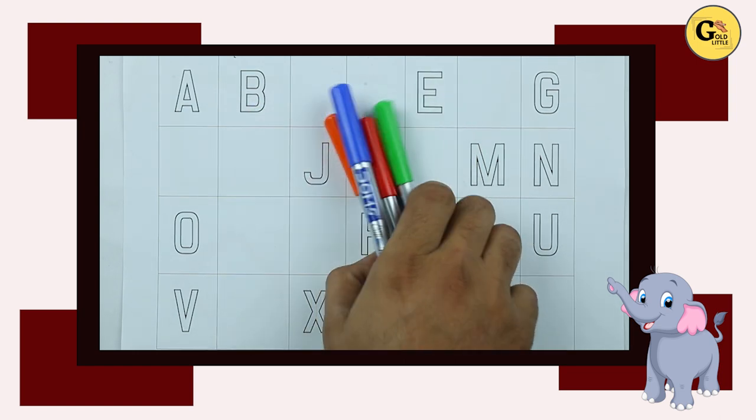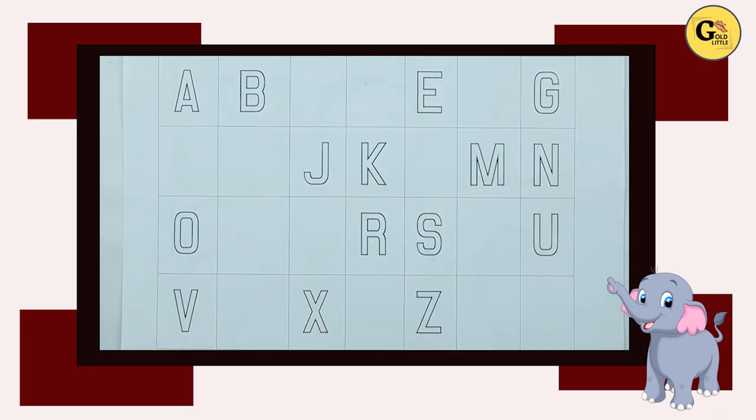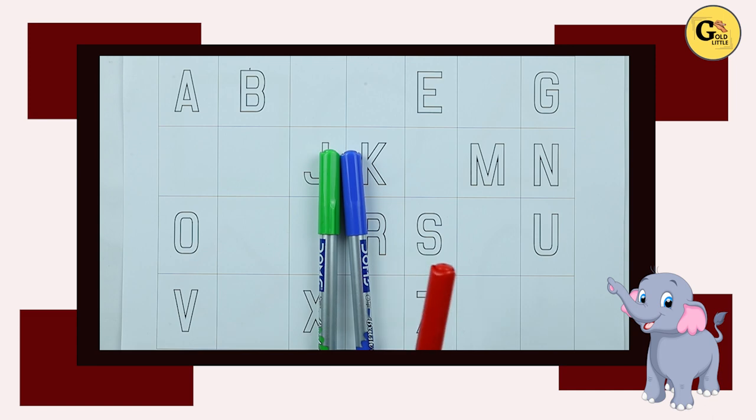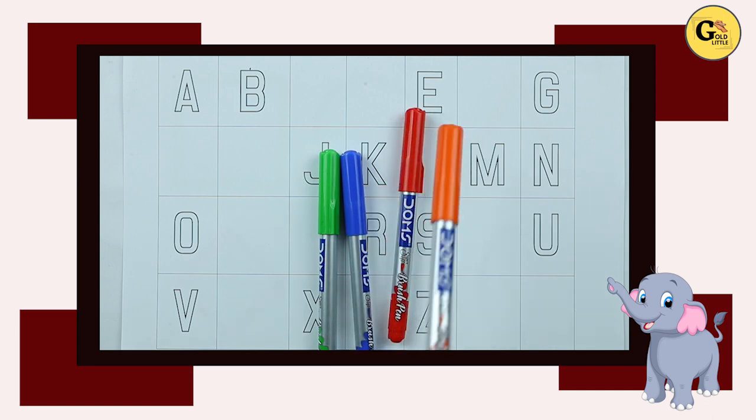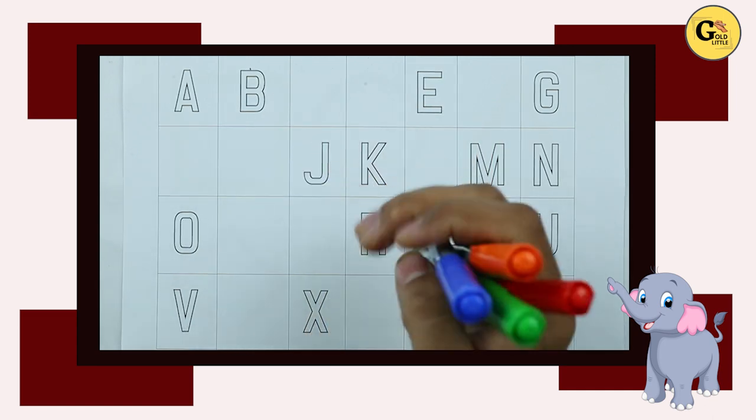Hello friends, today we learn alphabet with filling the blanks. Blue color, green color, red color, orange color. Let's start.